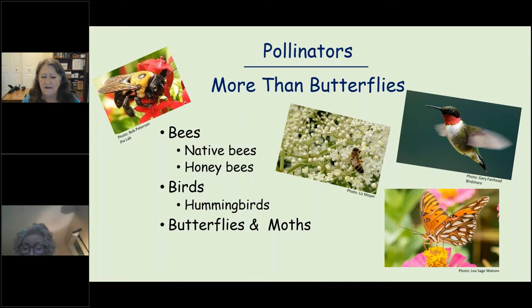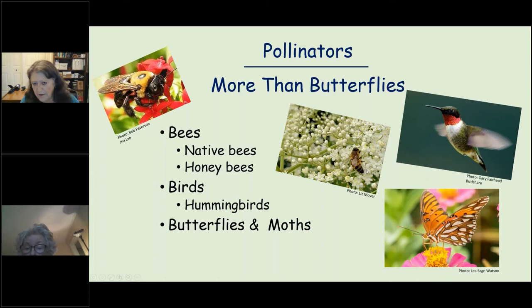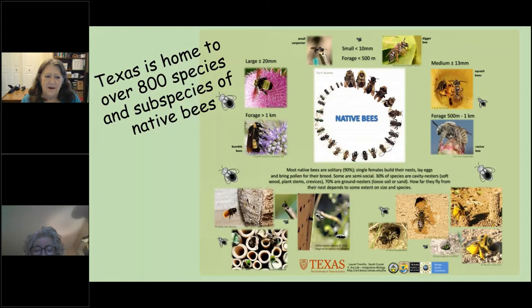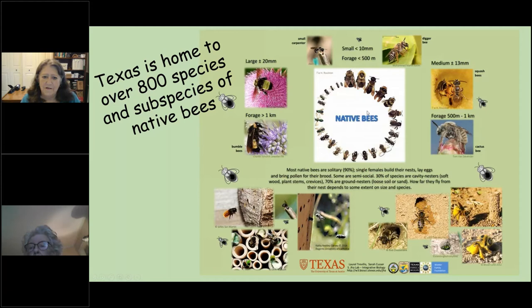Hummingbirds help pollinate, and of course we love butterflies and moths. Texas is home to over 800 species and subspecies of native bees, ranging from very small to very large. If you have large bees hanging around it's most likely one of our native bees. In general they are solitary — they don't go in hives, they don't swarm, and they'll leave you alone if you leave them alone.